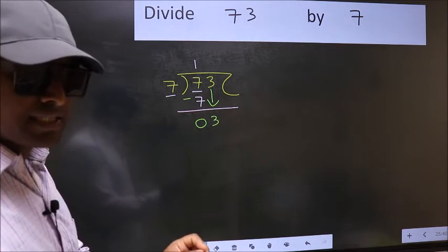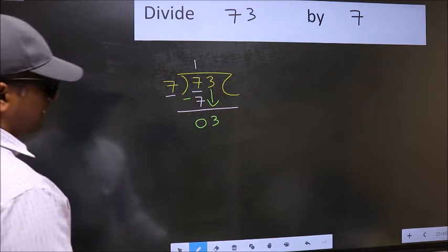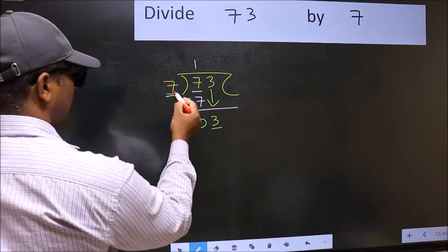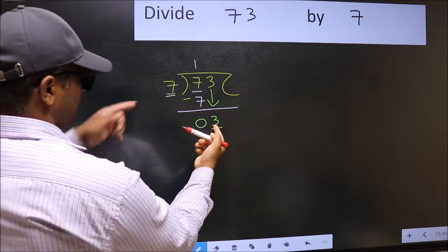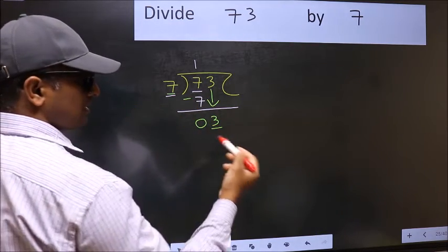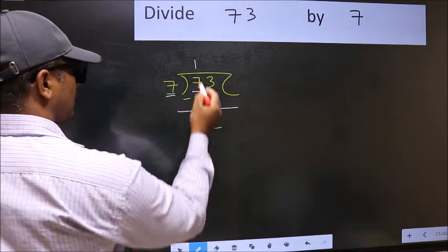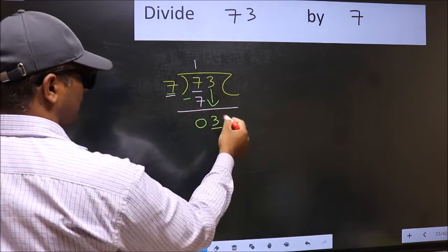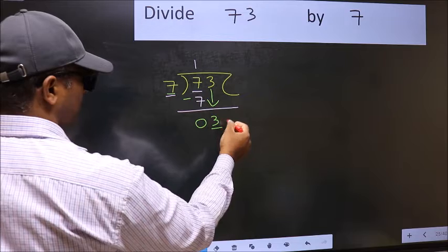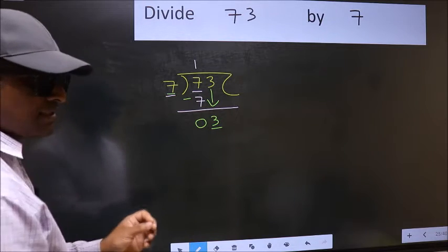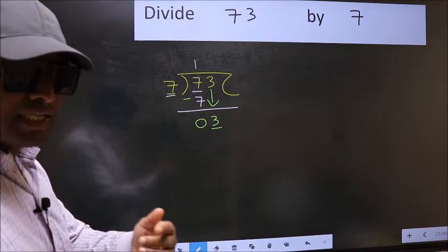And the mistake is this: here we have 3 and here 7. 3 is smaller than 7, so what many do is they directly put a dot and take 0. This is wrong. Why is it wrong?